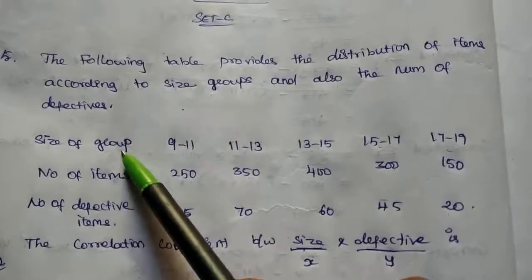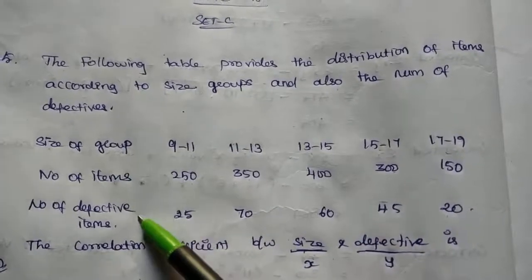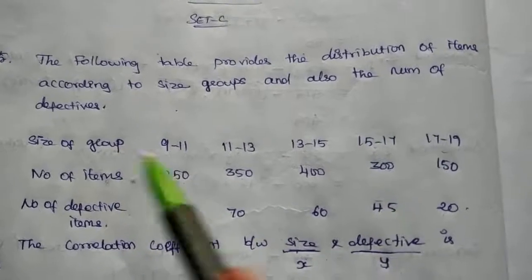Here we have size of group, number of items, and number of defective items - three rows.